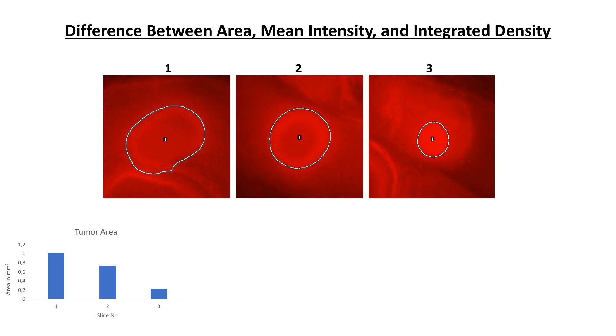You can easily see by eyeballing that the first image has the largest ROI. Next comes the region of interest in the middle image and lastly the one in the image on the right which is clearly the smallest.